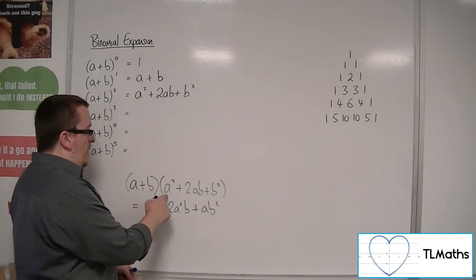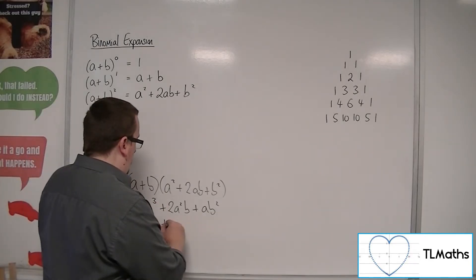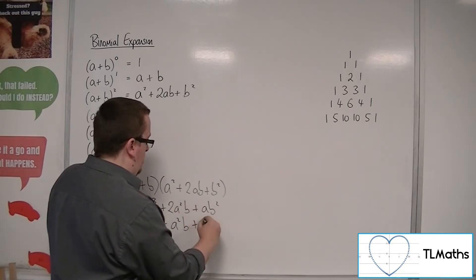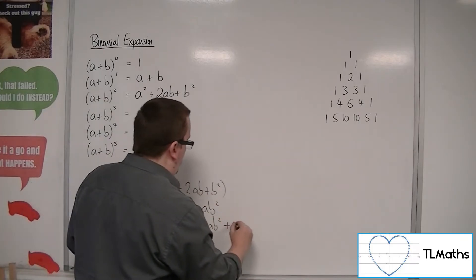Then multiplying b by a squared, we get a squared b. b times 2ab is 2ab squared, and b times b squared is b cubed.